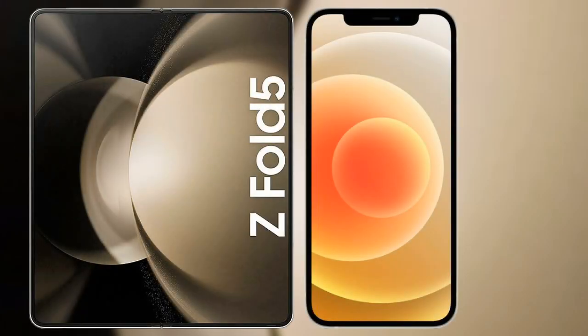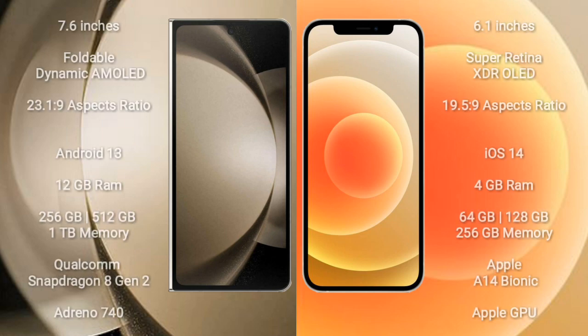I will compare the new Samsung Galaxy Z Fold 5 with iPhone 12. Samsung Galaxy Z Fold 5 has a 7.6-inch foldable Dynamic AMOLED display with an aspect ratio of 21.9. iPhone 12 has a 6.1-inch Super Retina XDR OLED display with an aspect ratio of 19.5:9. Samsung Galaxy Z Fold 5 runs on the Android 13 operating system, while iPhone 12 runs on iOS 14.